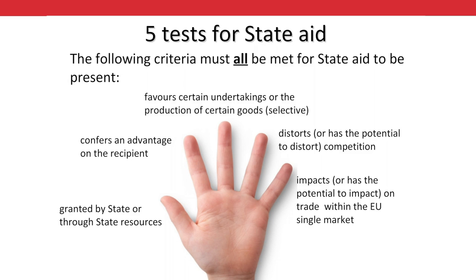To recap, the following five criteria must be met for state aid to be present: 1. That the aid be granted by the state or through state resources. 2. That the aid confers an advantage upon the recipient. 3. That the aid is selective. 4. That the aid distorts or has the potential to distort competition. 5. That the aid impacts or has the potential to impact upon trade between member states.